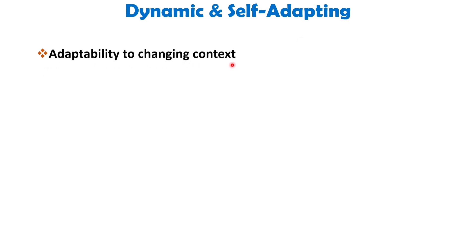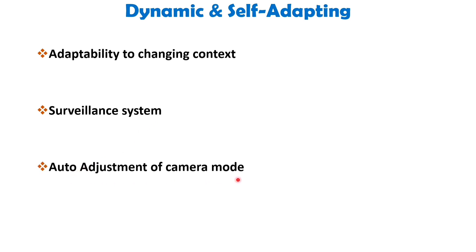The third important characteristic is dynamic and self-adapting capability. IoT devices and systems may have the capability to dynamically adapt to changing context and take actions based on their operating conditions, user's context or sensed environment. For example, surveillance cameras can adapt their modes to normal or infrared night modes based on whether it is day or night, and could switch from lower to higher resolution when motion is detected, alerting nearby cameras to do the same.